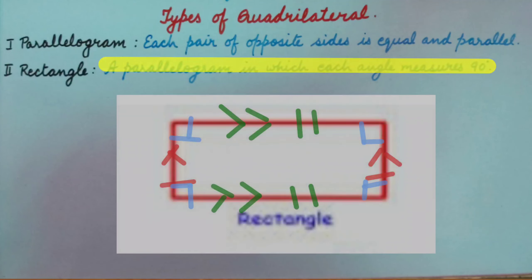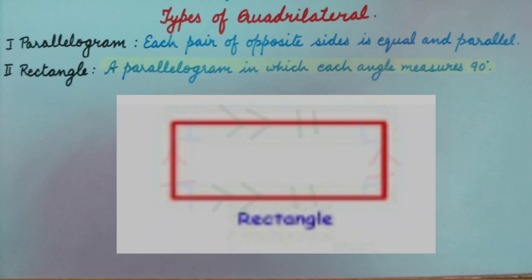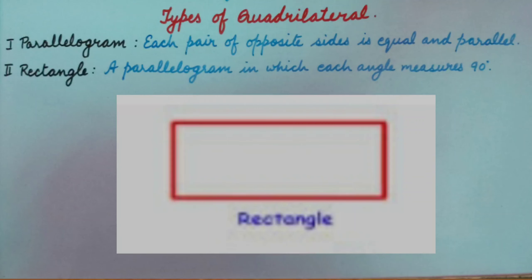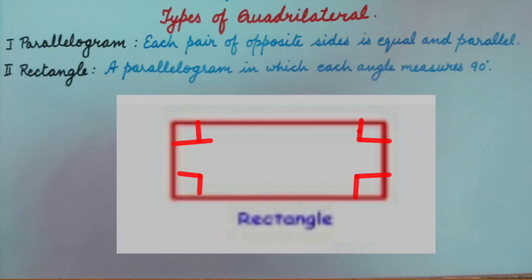Rectangle. A parallelogram in which each angle measures 90 degrees. Rectangle is a parallelogram, which means opposite sides are equal and parallel, and each angle measures 90 degrees.